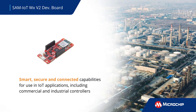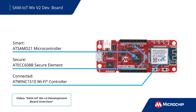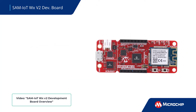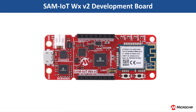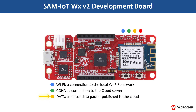Before we get started, let us look at the resources available on the board. For details, refer to the video 'SAM IoT WX V2 Development Board Overview.' There are four LED indicators on the board with different colors. The blue LED indicates a successful connection to the local Wi-Fi network. The green LED indicates a successful connection to the cloud. The yellow LED blinks indicating a successful transfer of sensor data to the cloud. The red LED indicates an error.